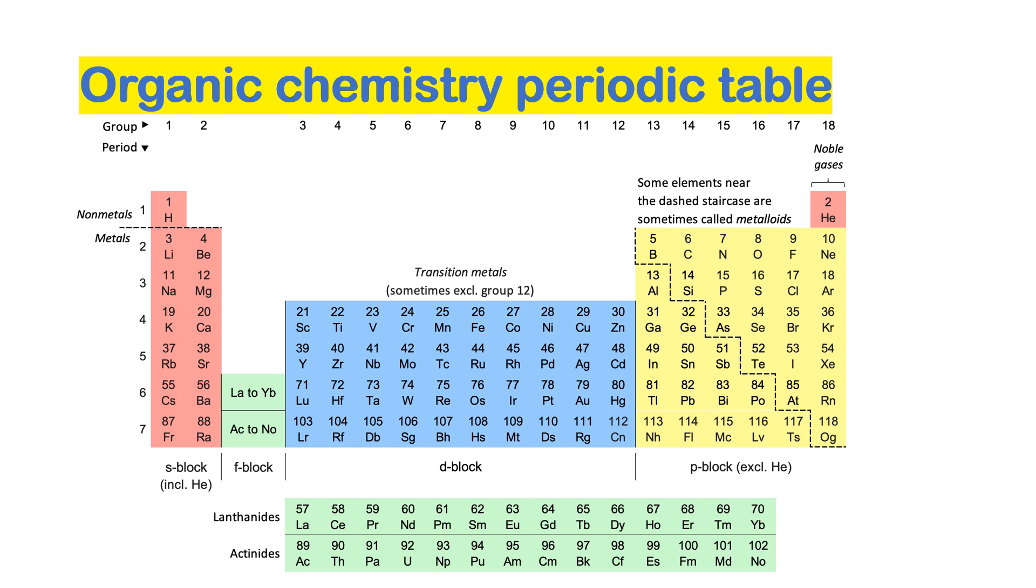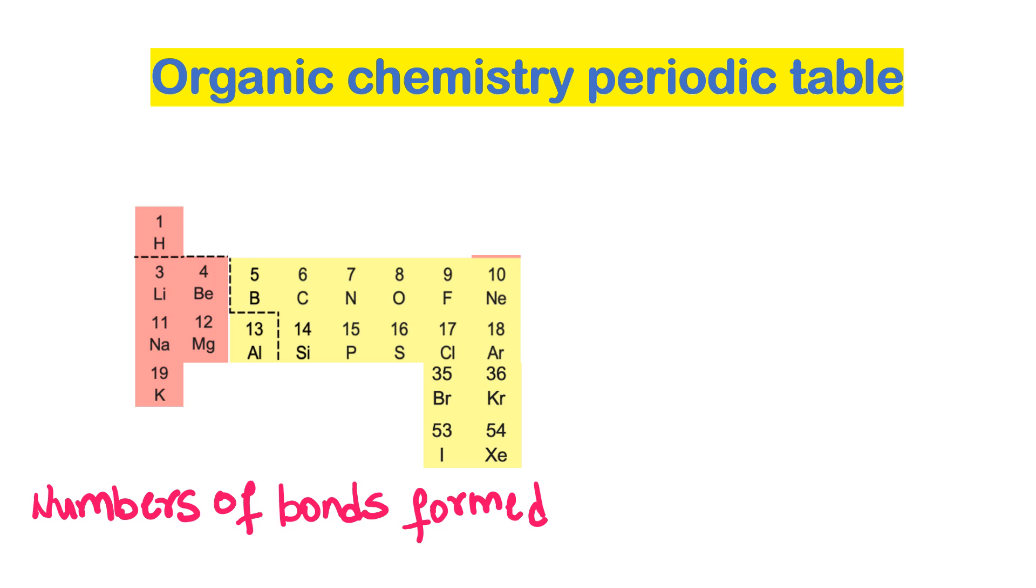Hello, do you know that organic chemistry doesn't need the whole periodic table? We have this consolidated periodic table. We can learn the number of bonds formed by atoms based on which group they are located in.